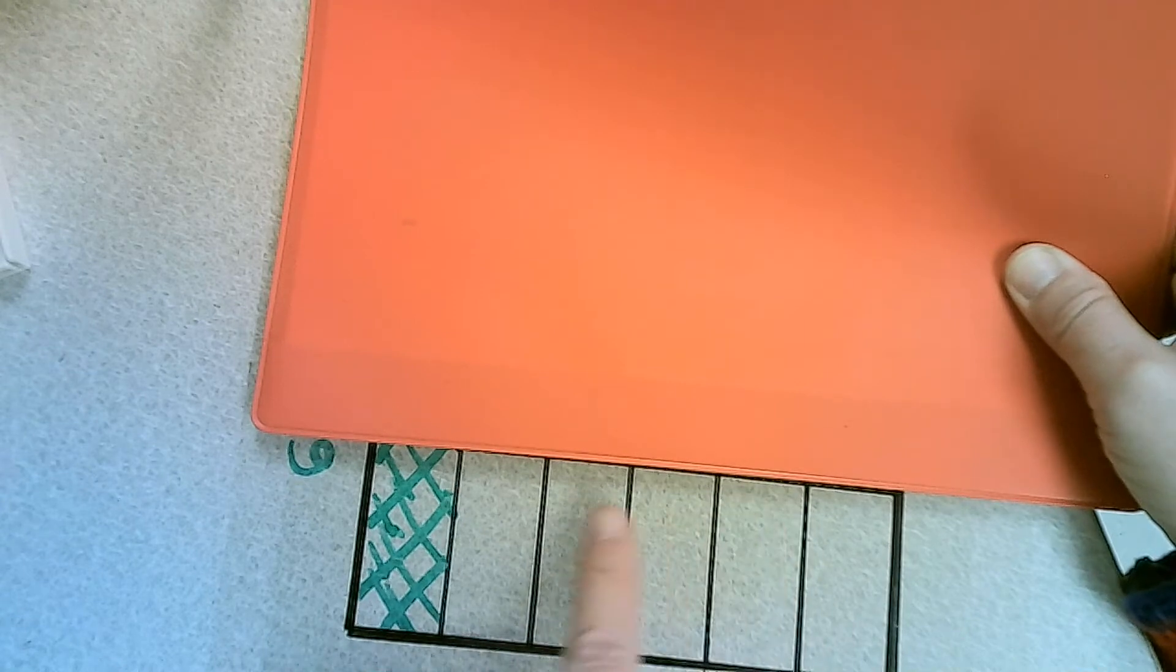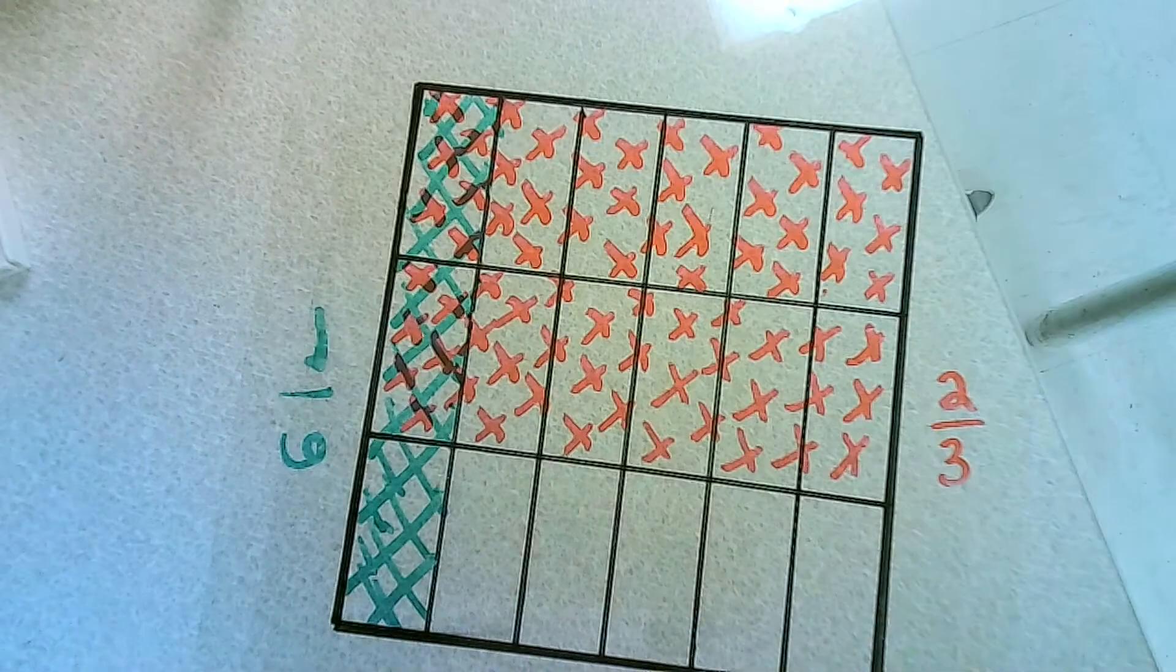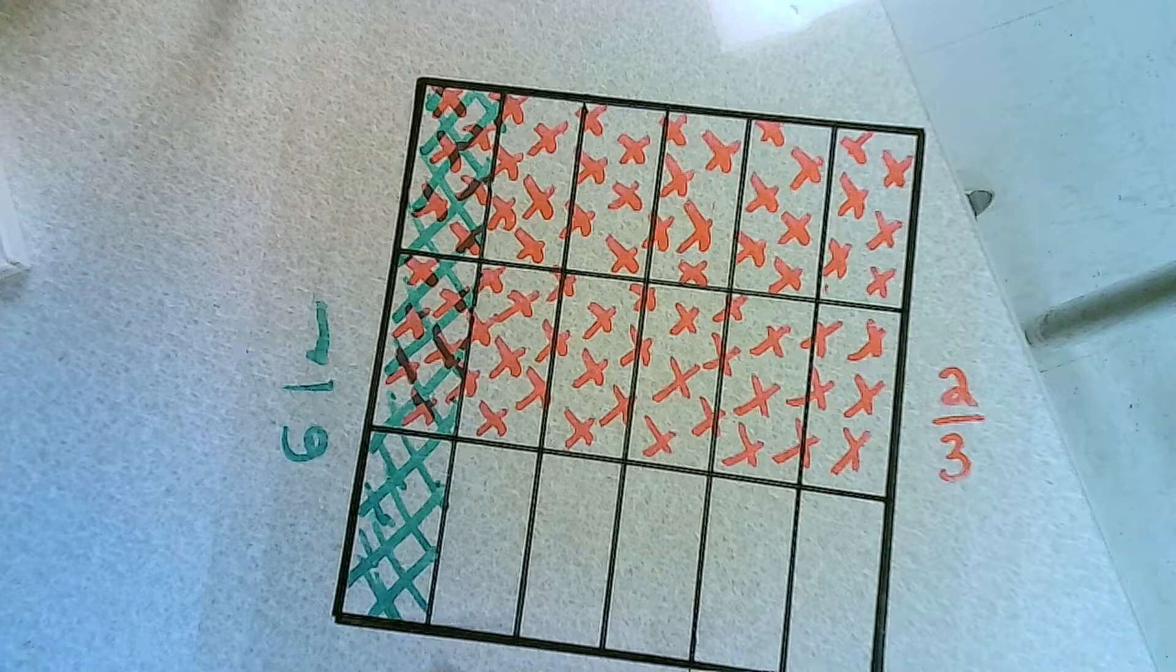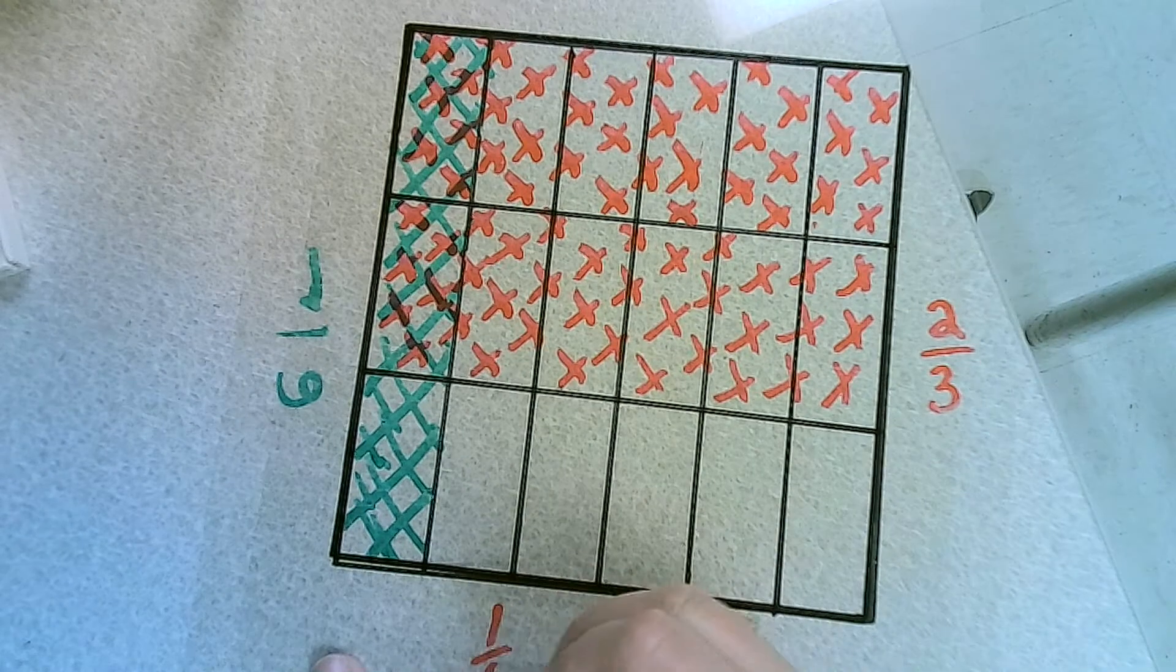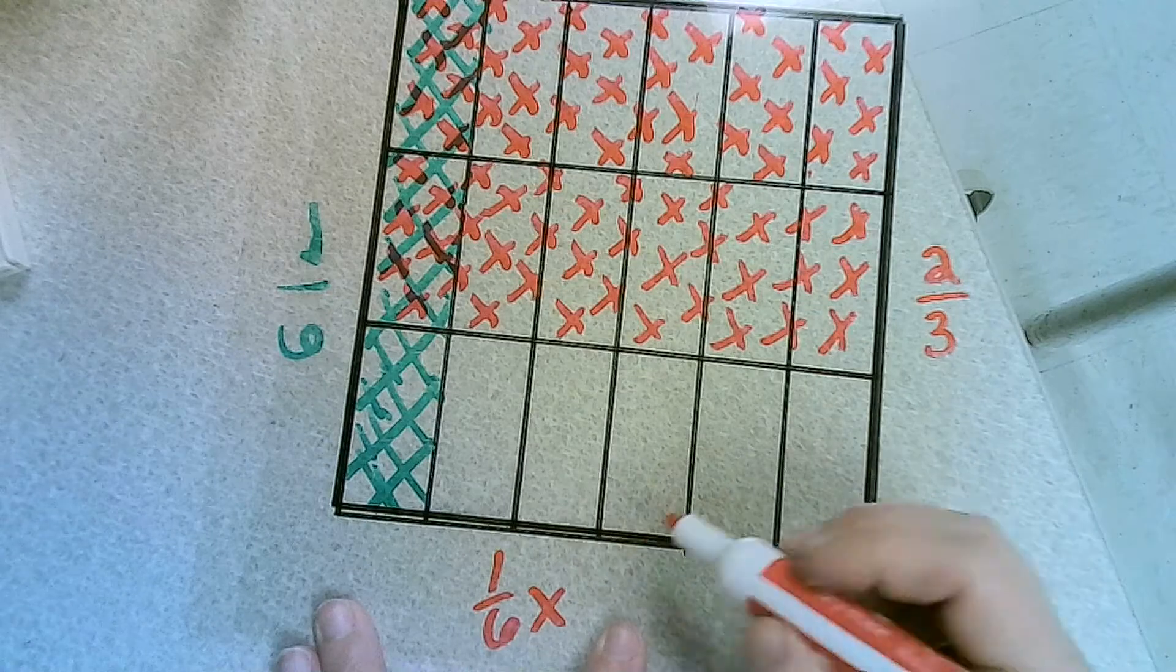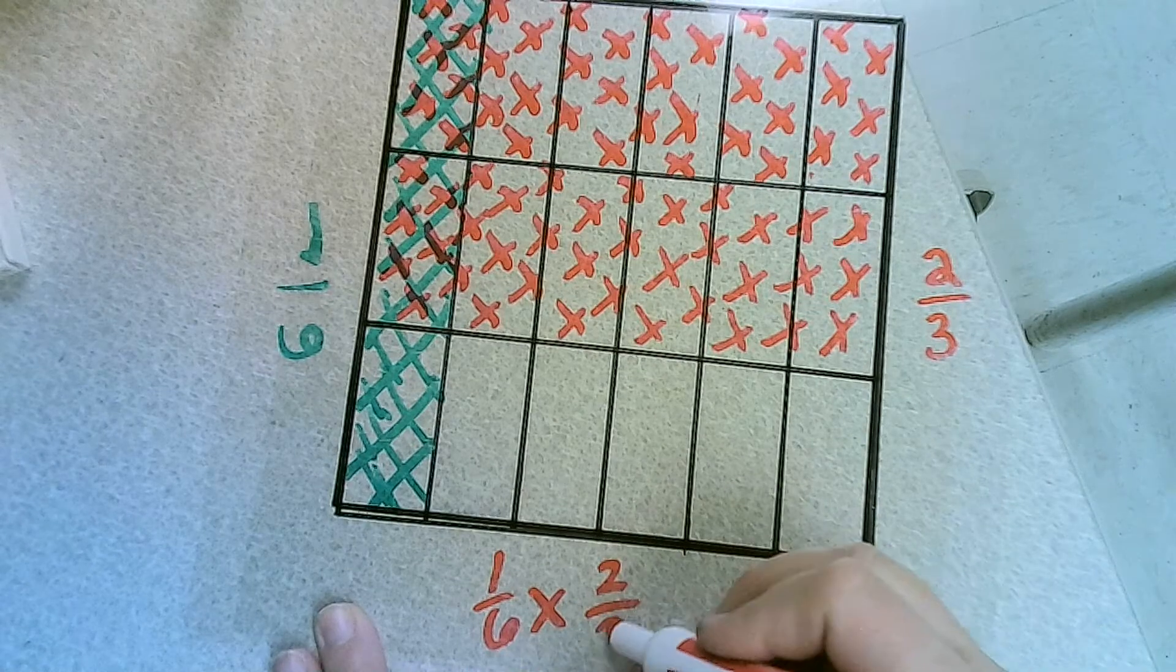1, 2, 3, 4, 5, 6. And 1 is colored in. So this one represents 1 sixth times 2 thirds.